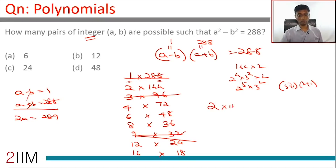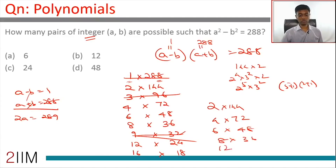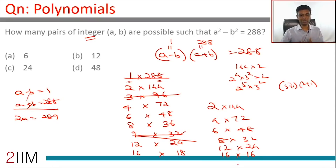The valid remaining pairs for (a minus b) and (a plus b) are: 2×144, 4×72, 6×48, 8×36, 12×24, and 16×18. These six pairs are the possible combinations assuming a and b are natural numbers.